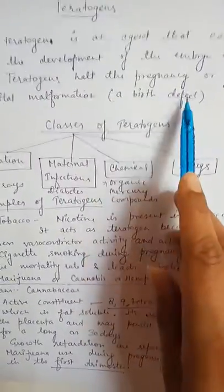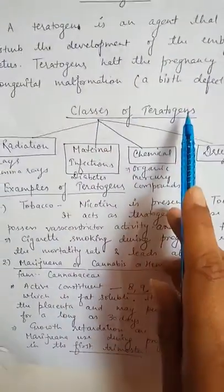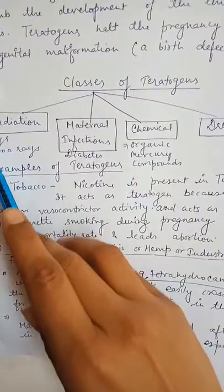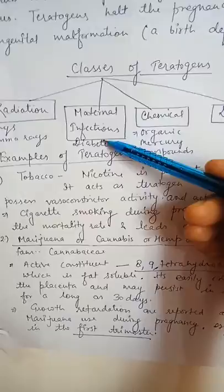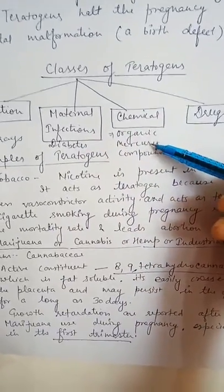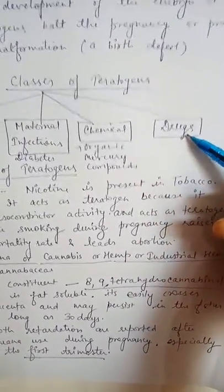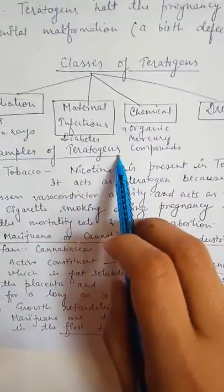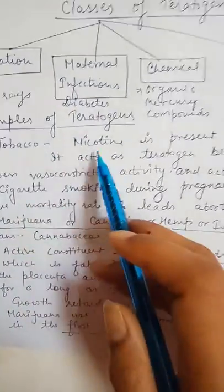Now what are the classes of teratogens? Sometimes radiation acts as a teratogen, like X-rays and gamma rays. Maternal infections like diabetes act as a teratogen. Chemicals like organic mercury compounds act as teratogens. Some drugs also act as teratogens.